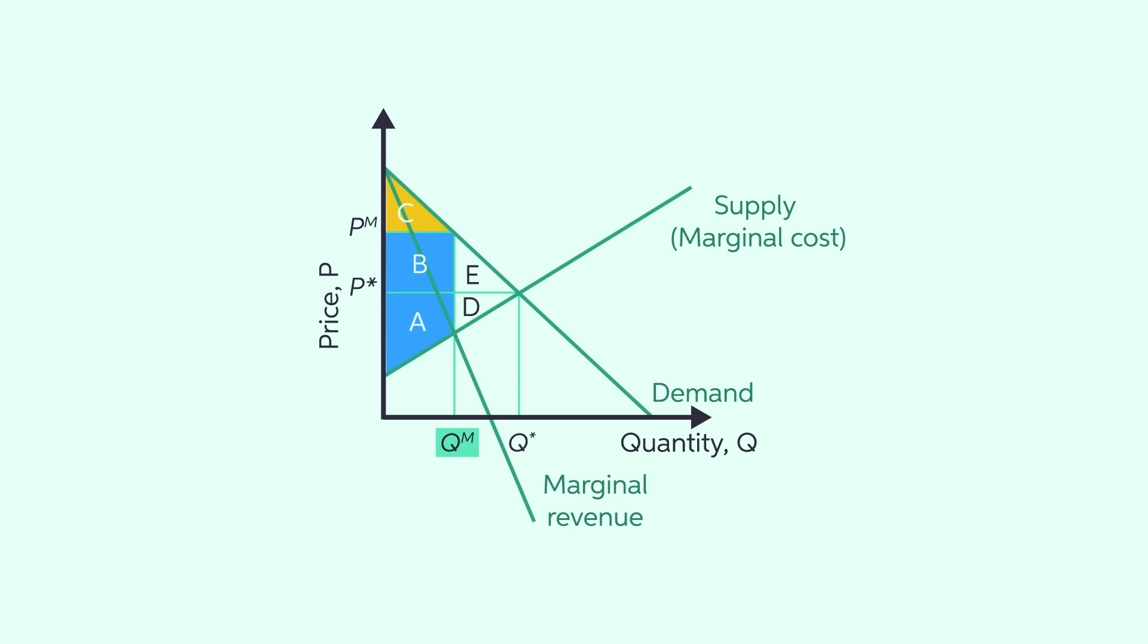So the social benefit from those last few transactions is now lost. Consumers are worse off because they gave up gains the size of areas B and E. The monopolist is better off comparatively. It loses area D, but that is smaller than what it gains in area B. But society as a whole is suffering because some of the potential gains from this market, areas E and D, are not realized under a monopoly. This is called deadweight loss.